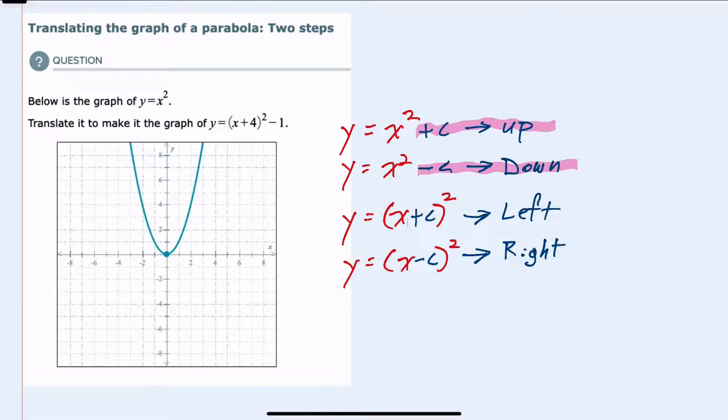When the number I'm adding is inside the parentheses and also being squared, that would shift left that many units, and when I subtract a number, that would shift right that many units.